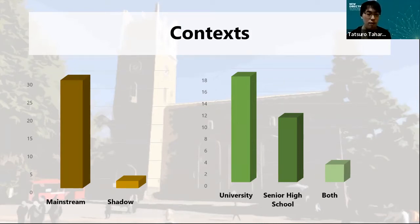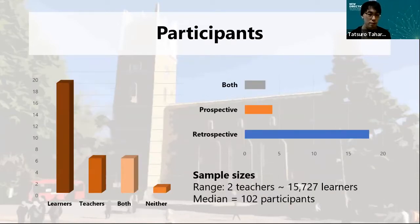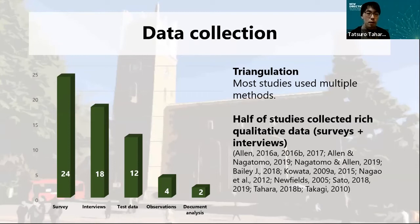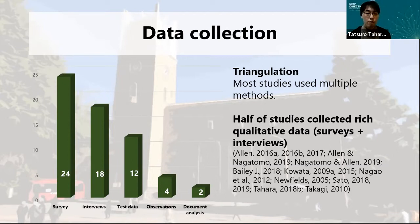As to the level of education, most studies involve university participants. As to participants, learners have been studied the most. Moreover, most studies ask learners to recall their experiences retrospectively. The sample size of studies ranges from two teacher participants to 50,727 learner perspectives, with a median of 102 participants. About data collection, most studies use multiple methods for triangulation. The most often utilized method is survey data; interviews have also been used extensively, followed by test data, observation, and document analysis. Half of the studies collected rich qualitative data such as surveys plus interviews.